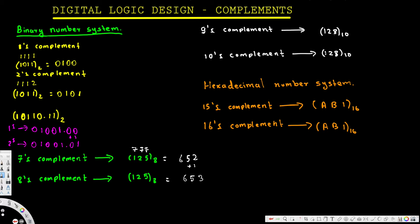Now let's look at nine's complement. Same approach — we put nine-nine-nine and subtract. Nine minus eight is one, nine minus two is seven, nine minus one is eight — so eight-seven-one is the nine's complement. To find the ten's complement, we add one to the last digit, giving us eight-seven-two.